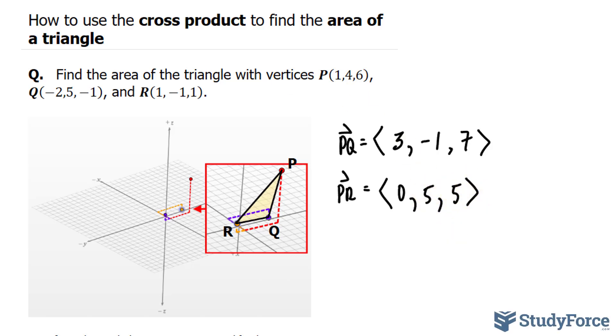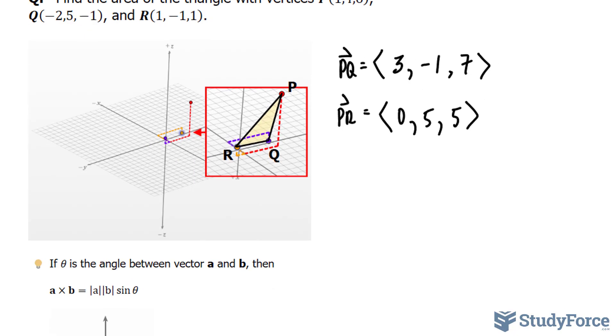We can find the cross product of these two vectors using this little trick that you picked up from the previous video, where you rewrite this twice. So 3 minus 1, 7. 3 minus 1, 7. 0, 5, 5, 0, 5, 5. Remember this pattern.